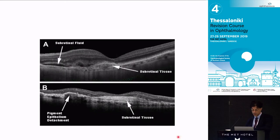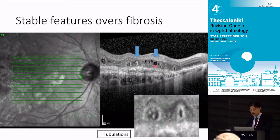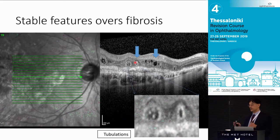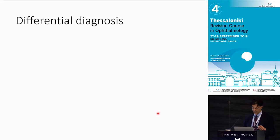Subretinal hyperreflective material can clear, but it can also be a continuum toward subretinal fibrosis, where you may consider stopping treatment. Definite fibrosis, cysts that may or may not respond to injections, and tubulations are distinct entities. Tubulations occur when the RPE is lost from various causes — fibrosis, geographic atrophy — and the photoreceptors roll up into themselves. Tubulations are not signs of disease activity and do not need to be injected.